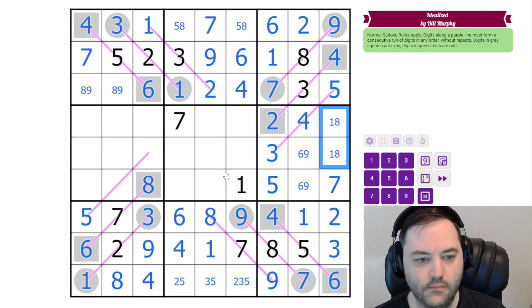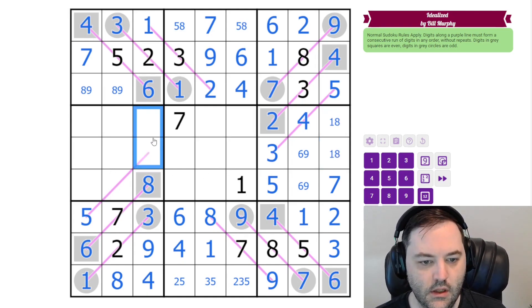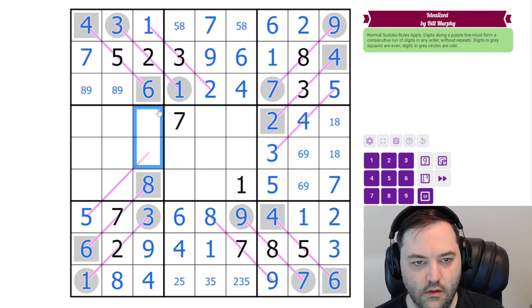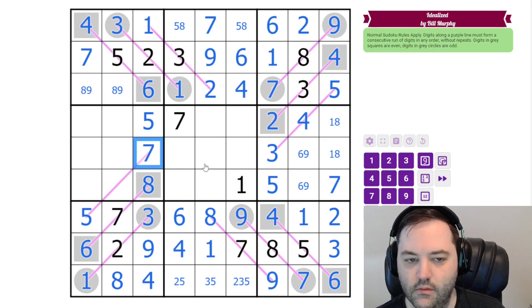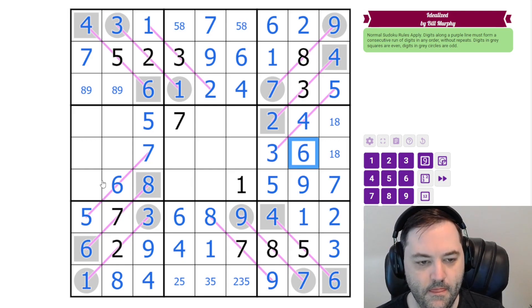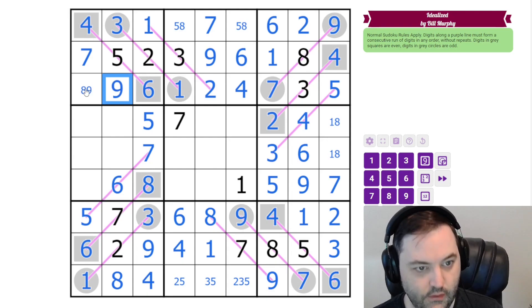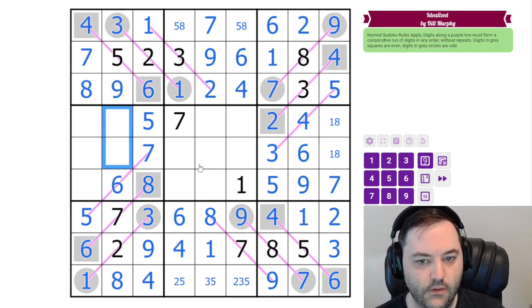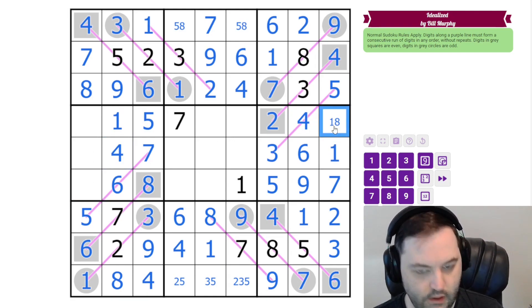So these are one and eight. Here we can do the same thing. We have a five on the line. So this can't be five. This is our five. Left is seven on the line. Six to go in between them. That resolves six and nine. The eight down here resolves nine, eight. These are one, four. Four there.